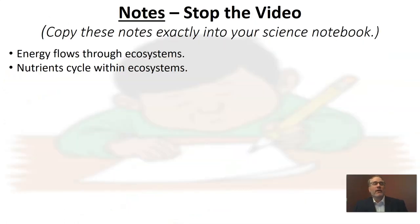Our notes today are really straightforward. The big idea to remember: energy flows through ecosystems, whereas nutrients cycle within the ecosystem — they never leave. Energy will eventually flow back out to space. Go ahead and copy this in your notebook, pause the video, and once you've got that done, restart the video.